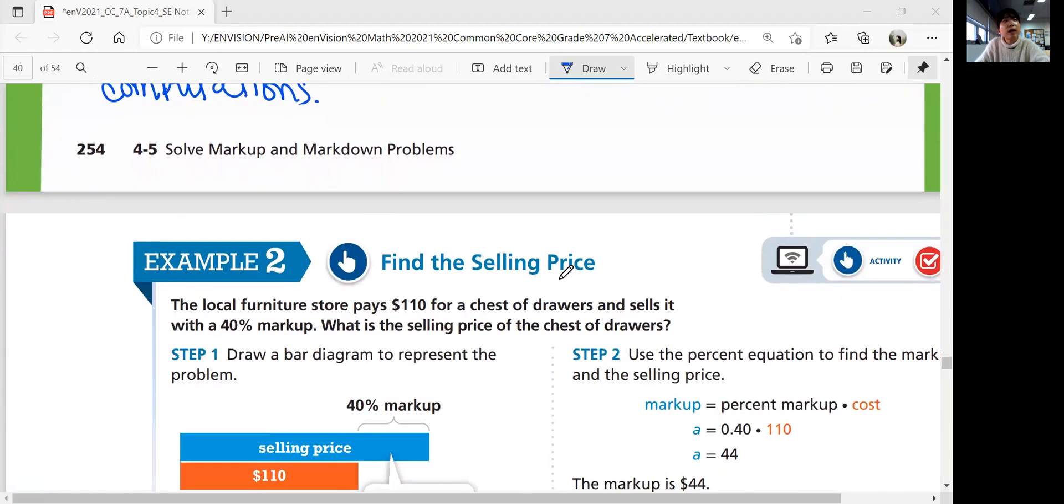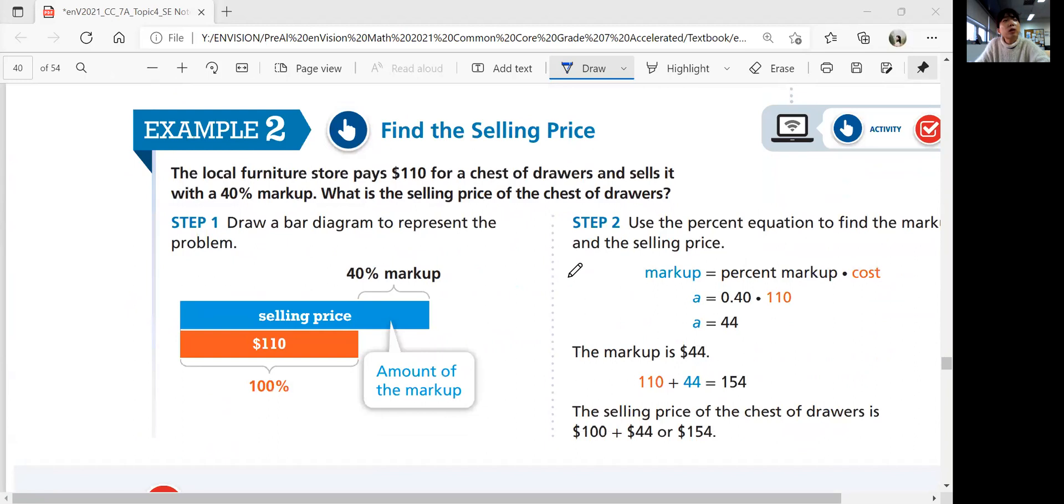Example two, find the selling price. The local furniture store pays $110 for a chest of drawers and sells it with a 40% markup. What is the selling price of the chest of drawers? The furniture store is going to pay $110 for a chest of drawers and sell it with a 40% markup. What's 40% of $110? You're going to add that to $110. That's your final price, the selling price.